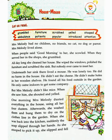Now we will read the chapter. Mrs. Melody had no children, no friends, no cat, no dog or parrot. Mrs. Melody ka koi bachcha, koi dost, koi billi, koi kutta aur tota nahi tha. Mrs. Melody lived alone. Vahe Mrs. Melody akeli rehti thi.